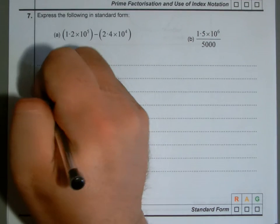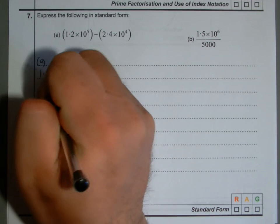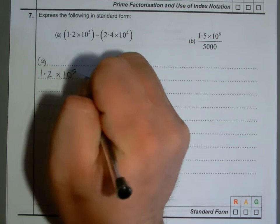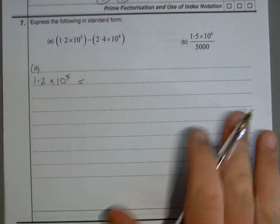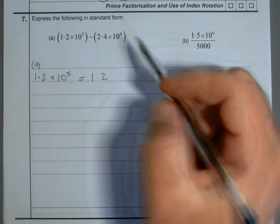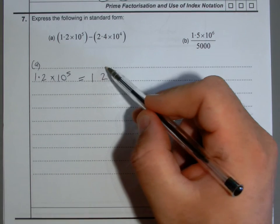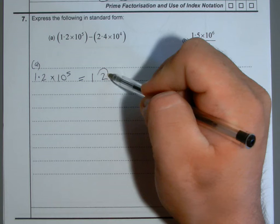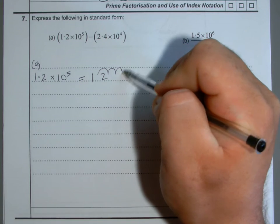First, we're going to rewrite these as ordinary numbers because they're in standard form at the minute. So 1.2 - if I move that decimal point, it's got to move five places because the power there is 5. So one, two, three, four...